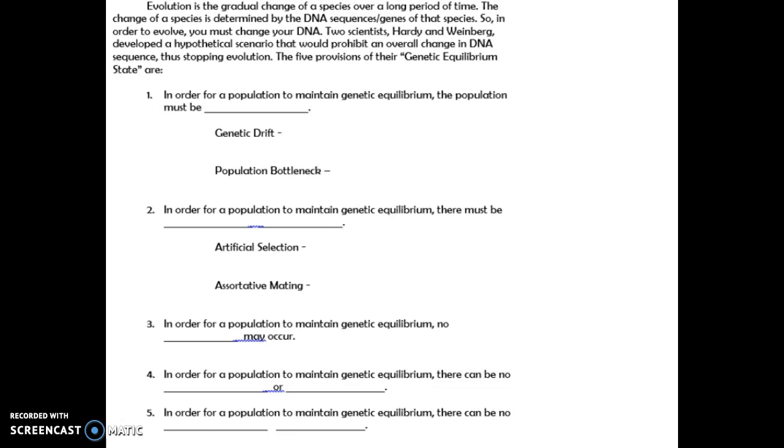So they came up with a hypothetical scenario. This is something that does not actually happen, but it's hypothetical in the fact that they found out that if you do these five things, you're going to keep the P and the Q value the same. For instance, if P, the dominant allele, was 70% of the population, Q would thus have to be 30, and if you abide by these five rules, you would maintain that same equilibrium. That's where the term genetic equilibrium comes from. In order for a population to maintain genetic equilibrium, that means not evolve, the population must be large.